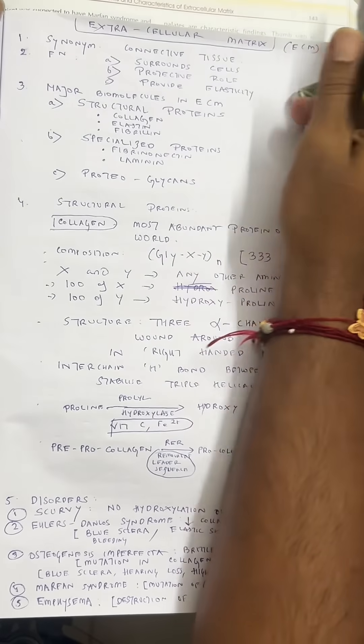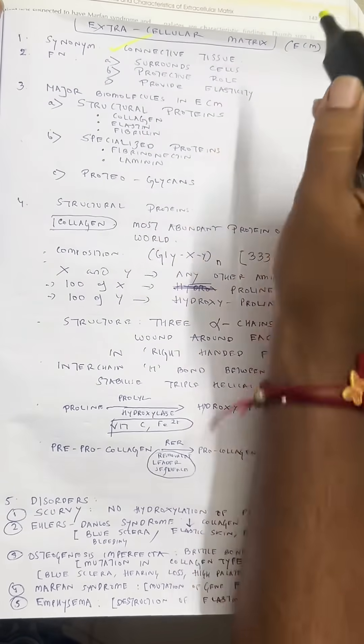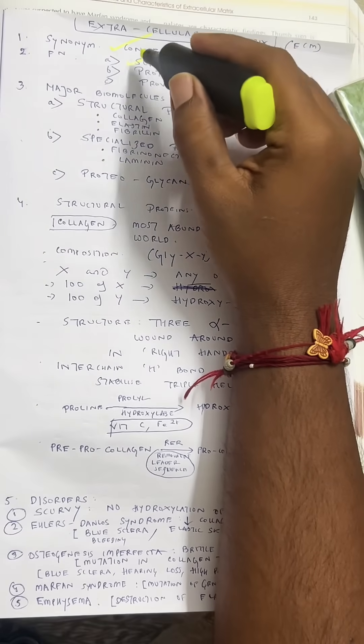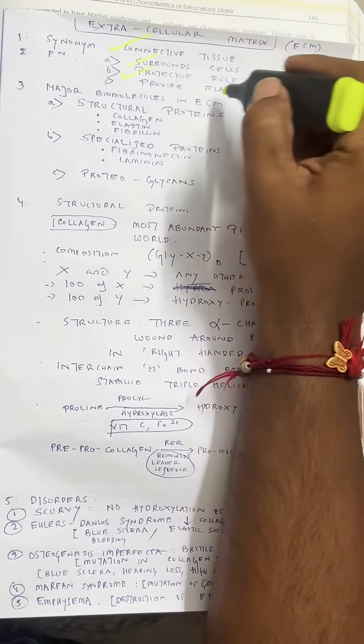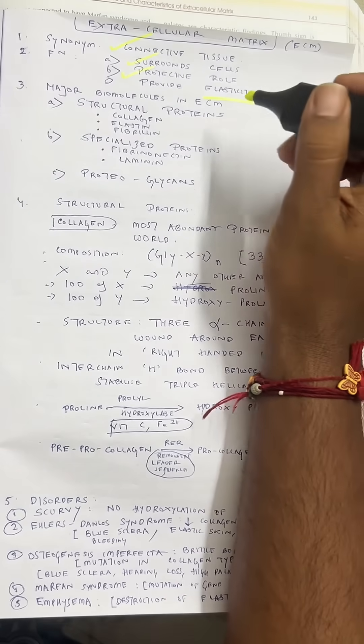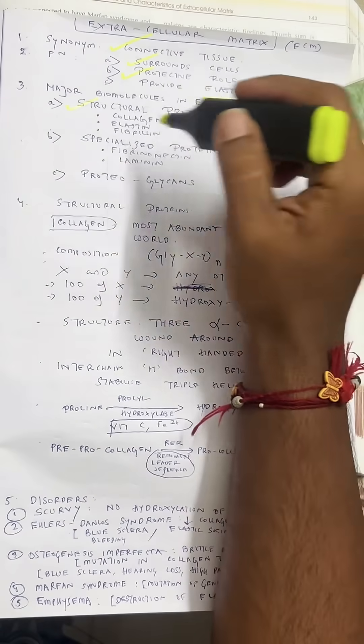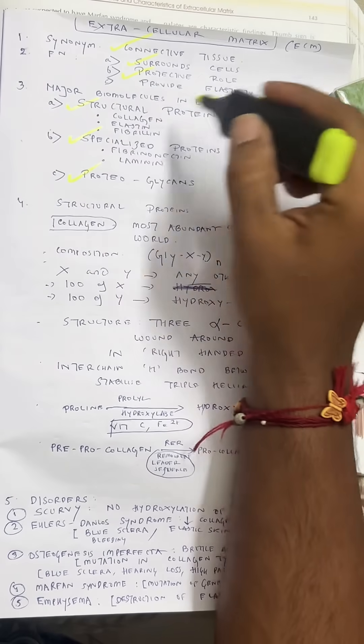Extracellular matrix, synonymous with connective tissue, functions to surround cells, has a protective role, and provides elasticity. Major biomolecules in the extracellular matrix are structural proteins, specialized proteins, and proteoglycans.